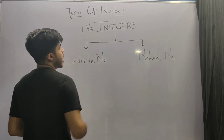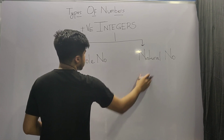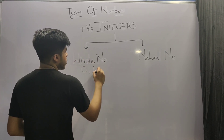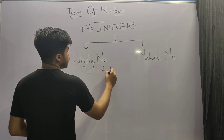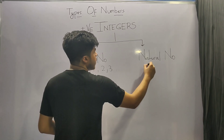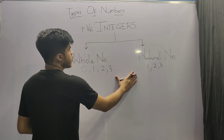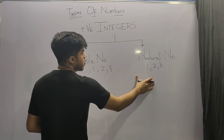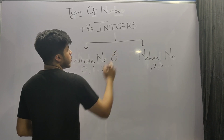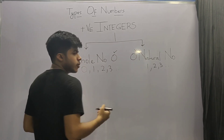Positive integers have a further sub-classification: whole numbers and natural numbers. In whole numbers, all the positive integers are included: 0, 1, 2, 3, and so on. In natural numbers, we have all the positive integers from 1, 2, 3, and so on. The only difference between a whole number and a natural number is that in whole numbers the integer 0 is included, while in natural numbers 0 is not included.